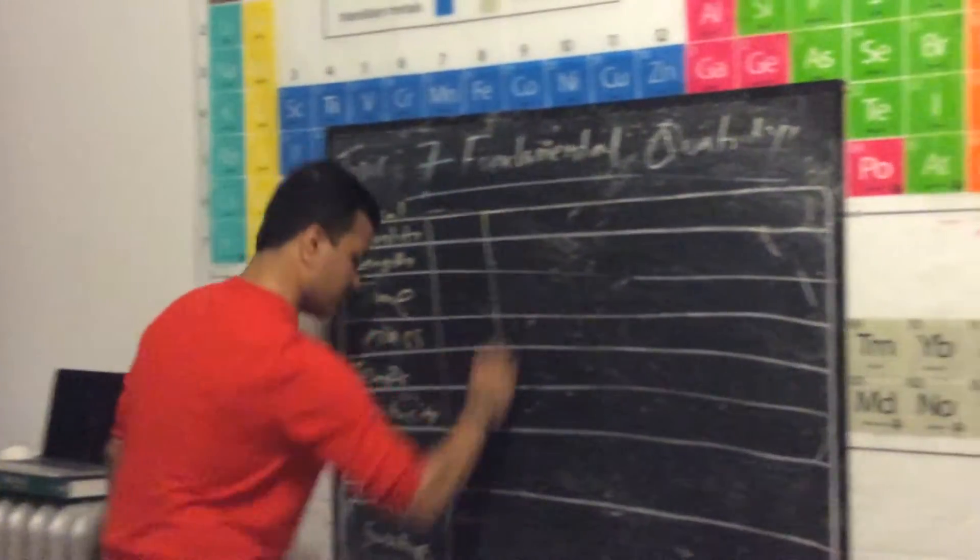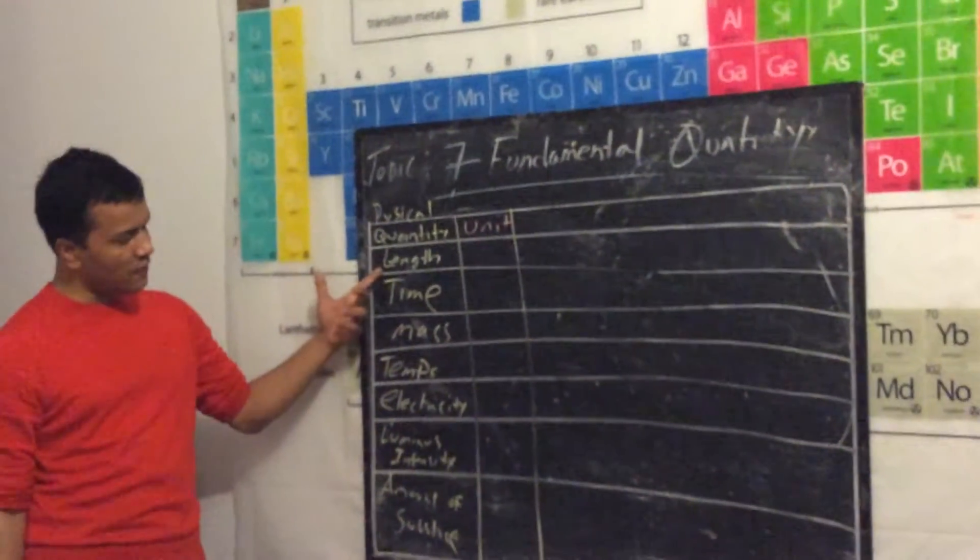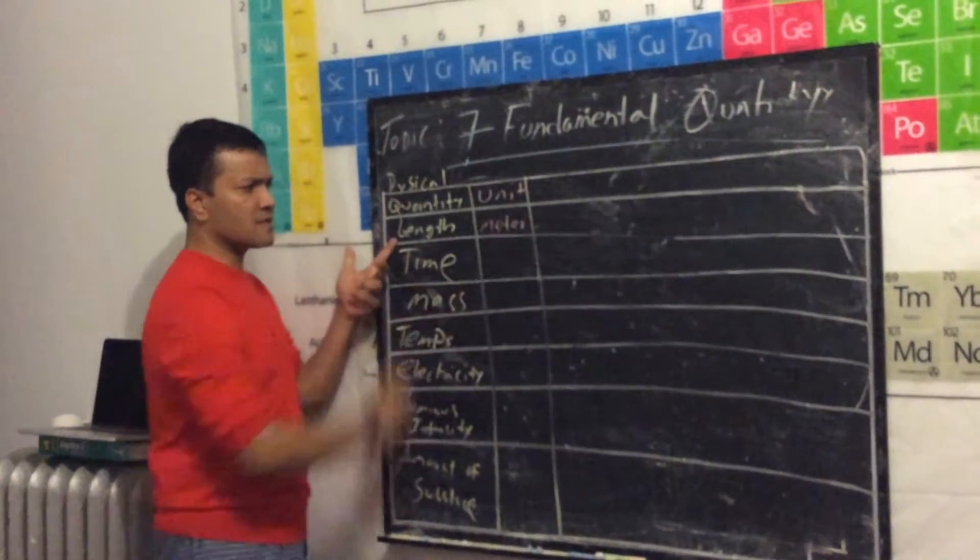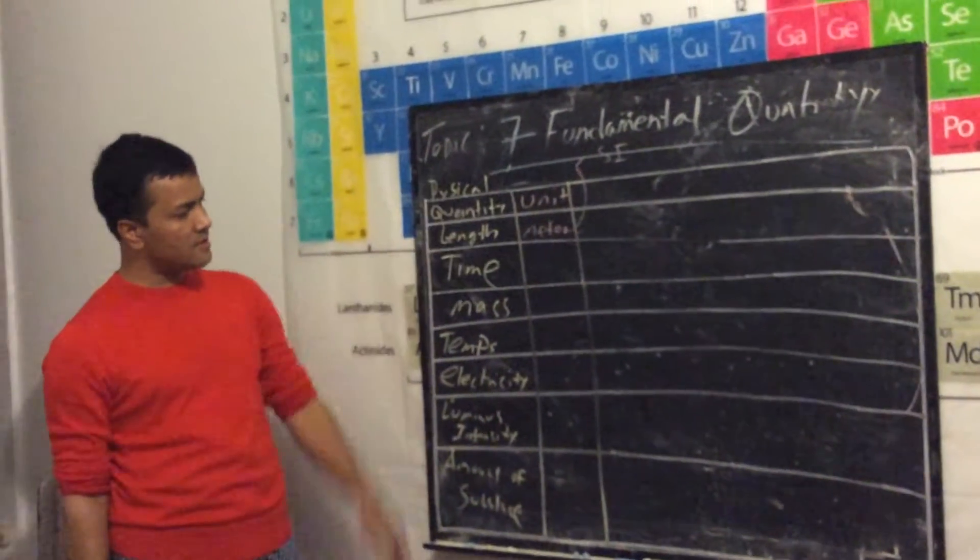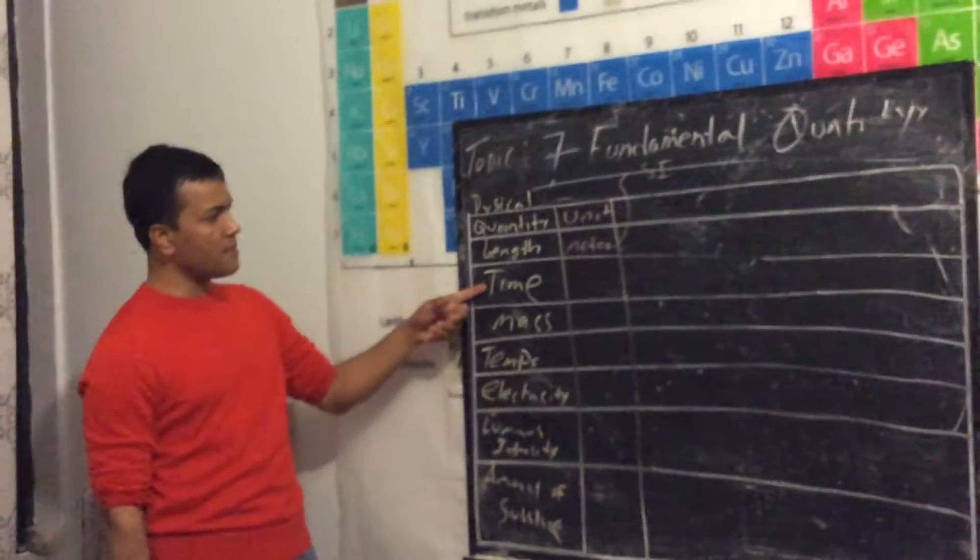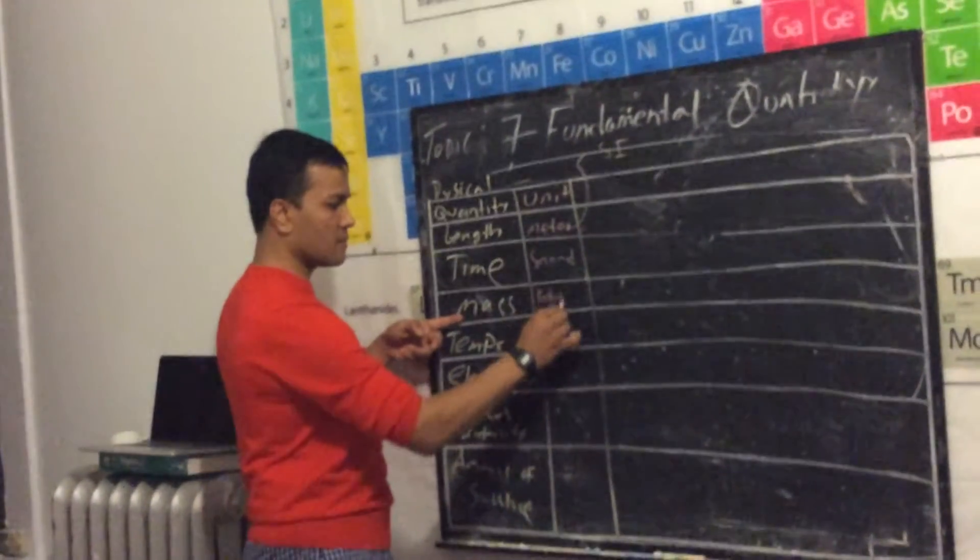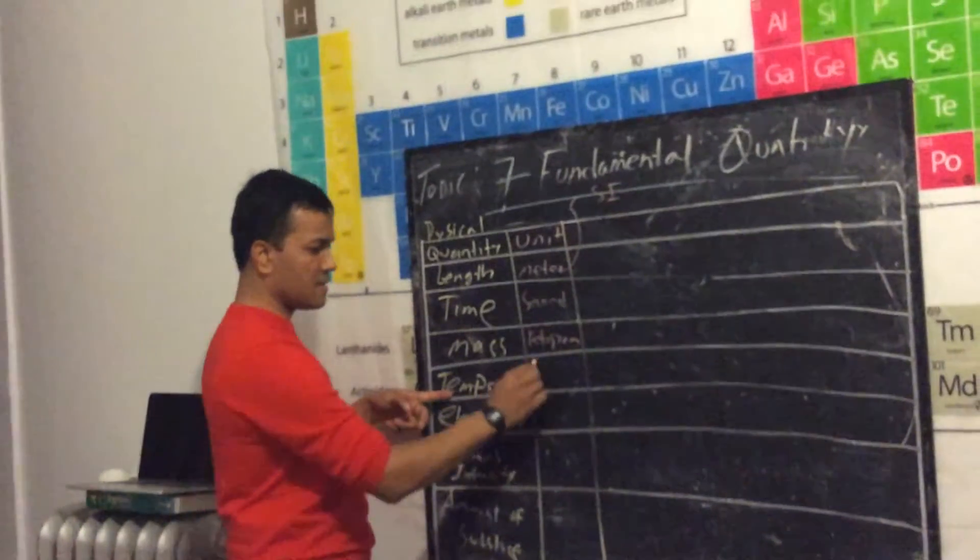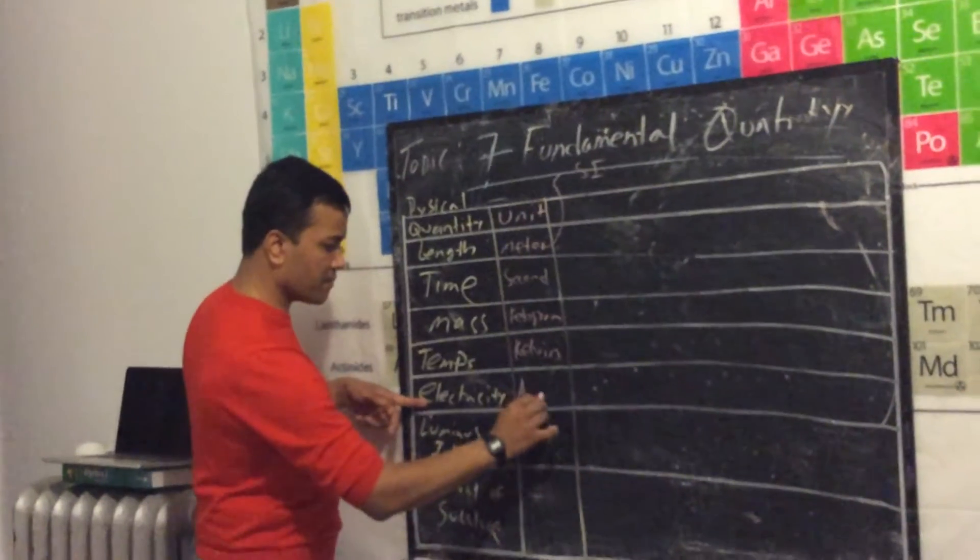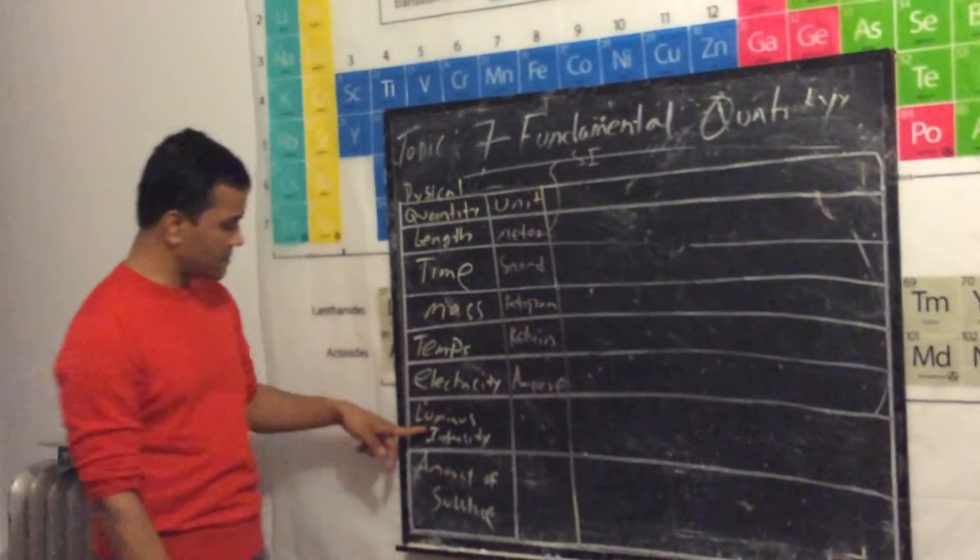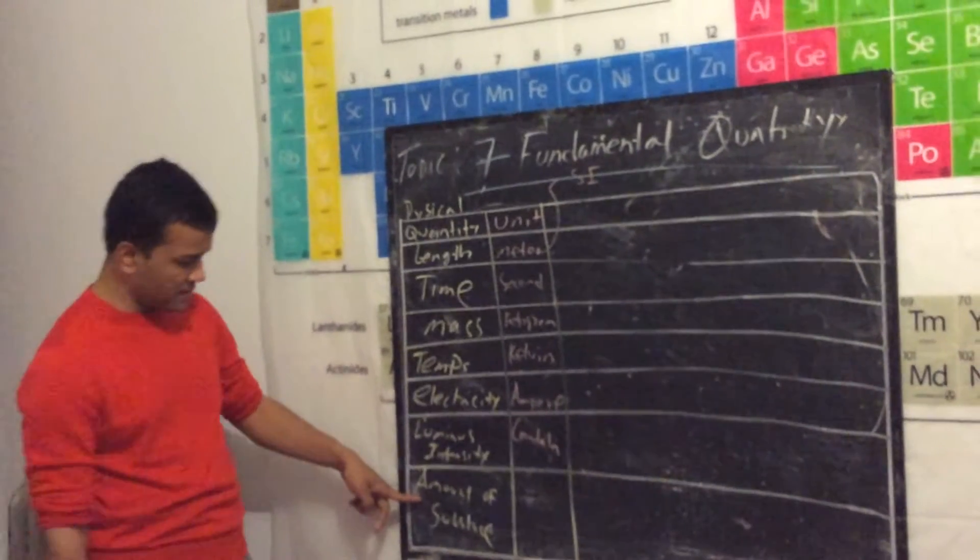Now let's go over the units. What units do we use for length? Meter, not surprising. Meter is the metric system as I described in the beginning. Time: second. Mass: kilogram. Temperature: Kelvin. Electricity: ampere. Luminous intensity: candela. Last but not least, amount of substance: mole.